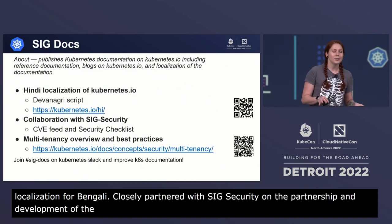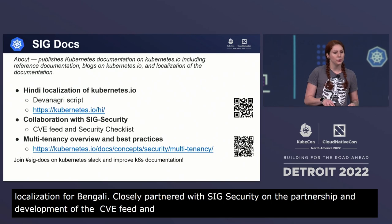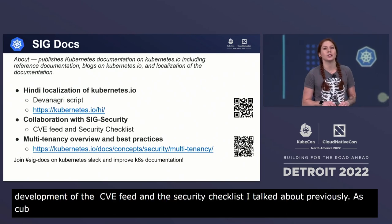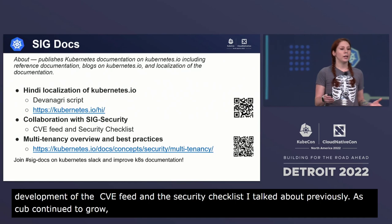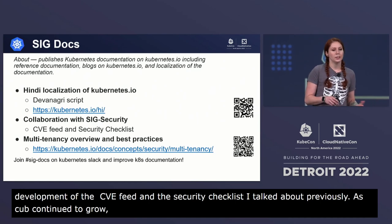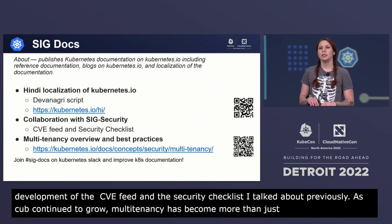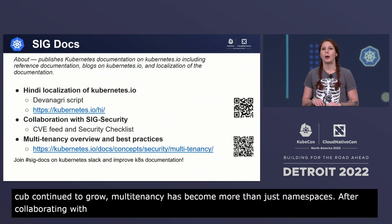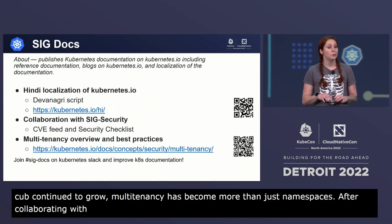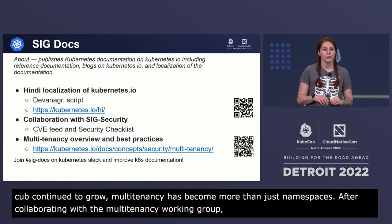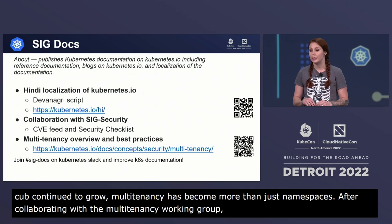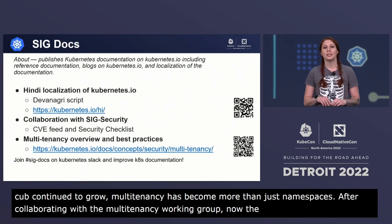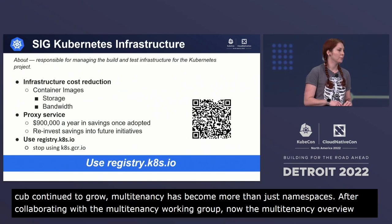As the scope and use of Kubernetes has continued to grow, multi-tenancy has become more than just namespaces. After collaborating with the multi-tenancy working group, SIG docs is pleased to announce the new Kubernetes multi-tenancy overview and best practices, which describes use cases, terminology, access controls, data plane isolation, and so much more. Please join SIG docs on the Kubernetes Slack channel.